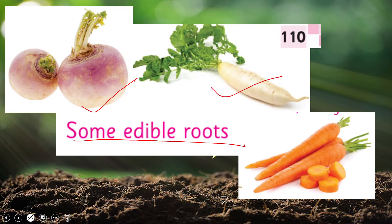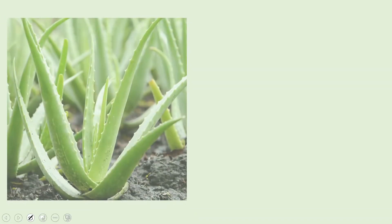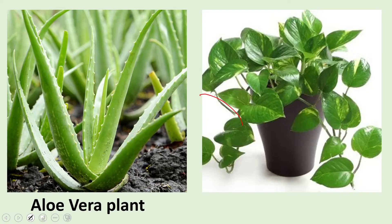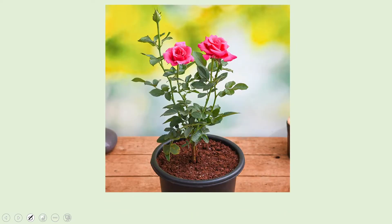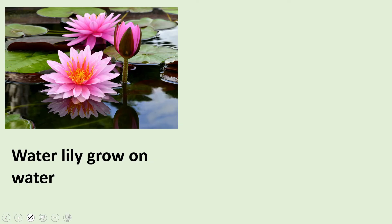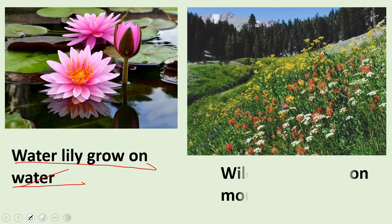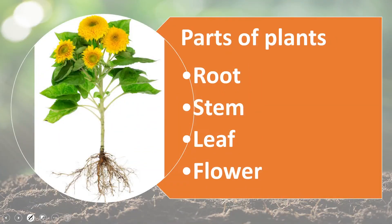Some edible roots are turnip, radish, and carrots. Peas also have roots — they are underground. Aloe vera ki roots bhi hain, money plant ki bhi. In tamam plants ki roots jo hain wo zameen ke niche hoti hain. Rose plant — yeh stem abhi erect hai aur is ki bhi roots hain jo soil ke andar hain. Plants make their own food by photosynthesis.